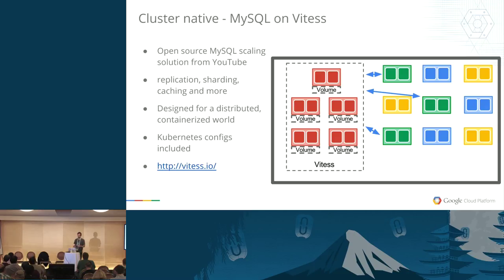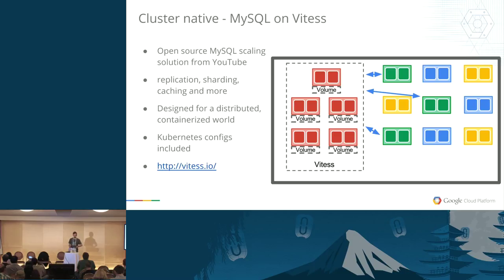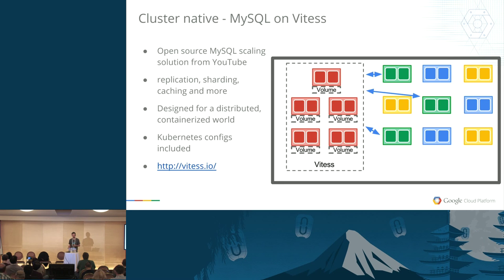The third approach — cluster-native — is a shout out to a project we started at YouTube called Vitesse. Vitesse is essentially a sharded MySQL server that manages a bunch of MySQL shards and allows you to interact with it as if you're interacting with one MySQL server. They've provided setup scripts and configuration you can use to run Vitesse on Kubernetes in a container cluster — it's actually kind of working in a containerized world. It's a really good example of how you'd get that running.